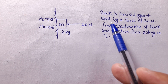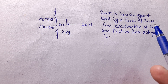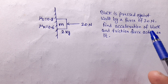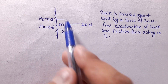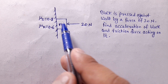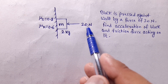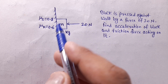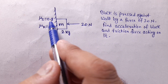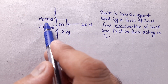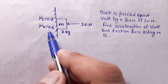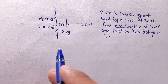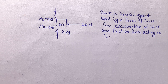A block is pressed against a wall by a force of 20 Newton. Find the acceleration of the block and the friction force acting on it. The coefficient of static friction is μs = 0.8 and the coefficient of kinetic friction is μk = 0.6. We have to find the acceleration of the block and the friction force acting on it.